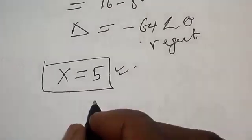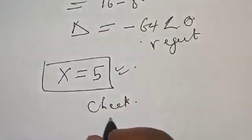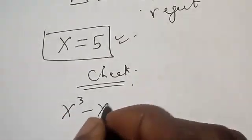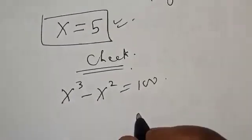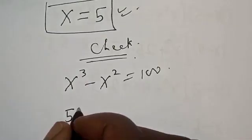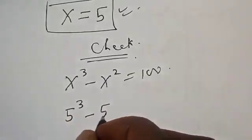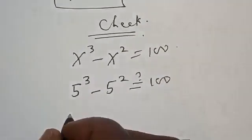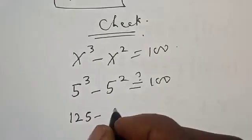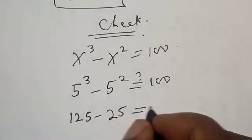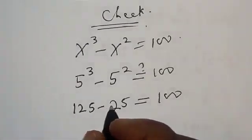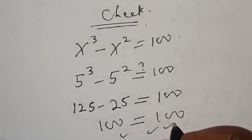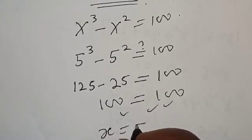Let's check to confirm our answer. We have the given equation: x raised to power 3 minus x squared equals 100. At x equal to 5, we have 5 raised to power 3 minus 5 squared, which must equal 100. Then 5 cubed is 125, and 5 squared is 25. So 125 minus 25 equals 100. The left-hand side equals 100, which satisfies the given equation at x equal to 5.